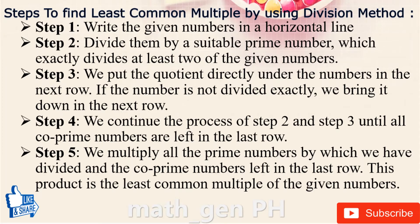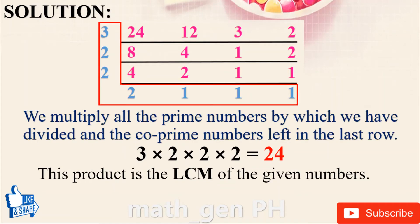Steps to find the LCM using the division method: write the numbers in a horizontal line, divide by a suitable prime number that exactly divides at least two of them, bring down numbers not divisible, and continue until all co-prime numbers remain. Multiply all the prime divisors and remaining co-prime numbers. For 24, 12, 3, and 2: 3 times 2 times 2 times 2 equals 24. The LCM is 24.